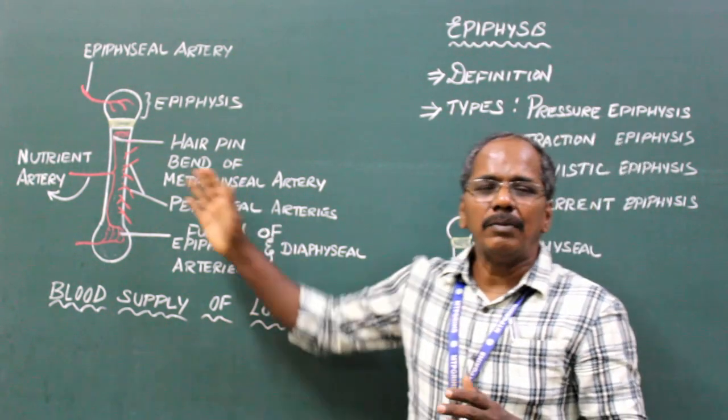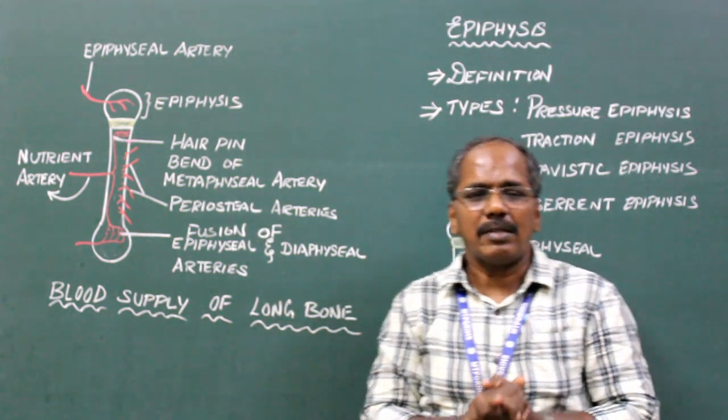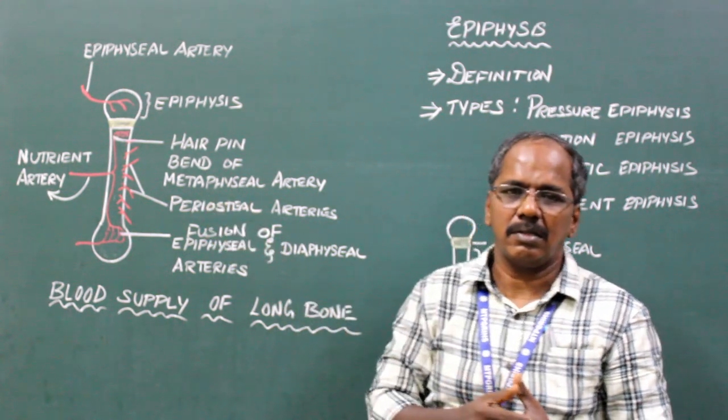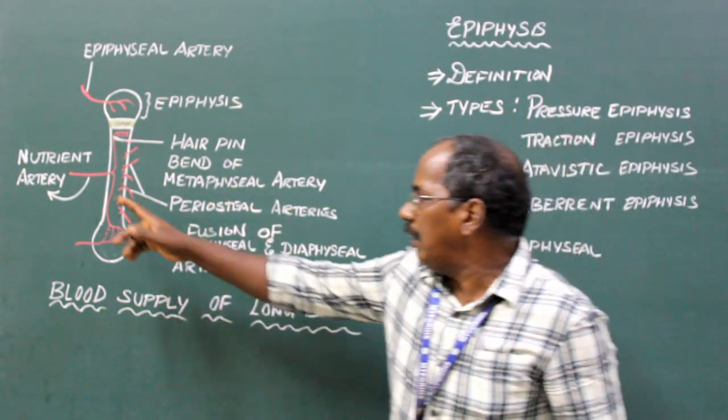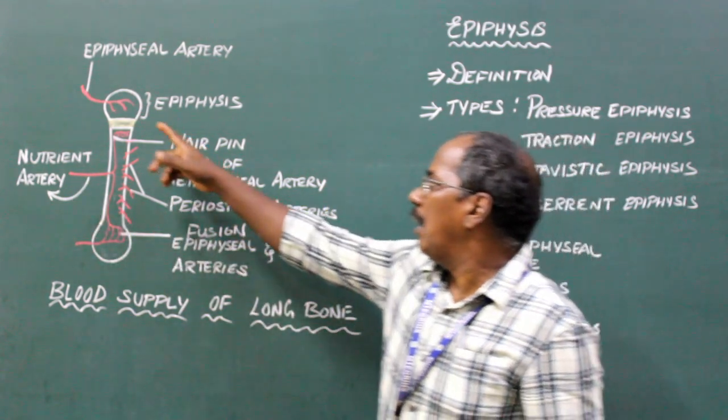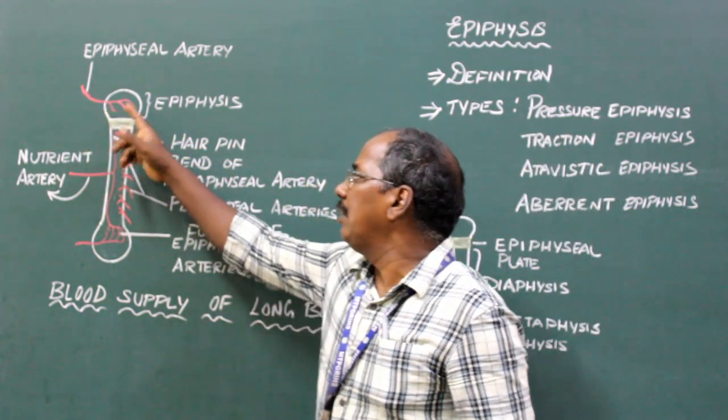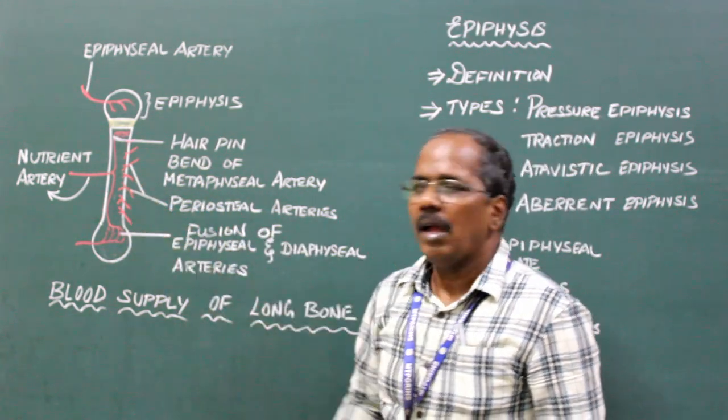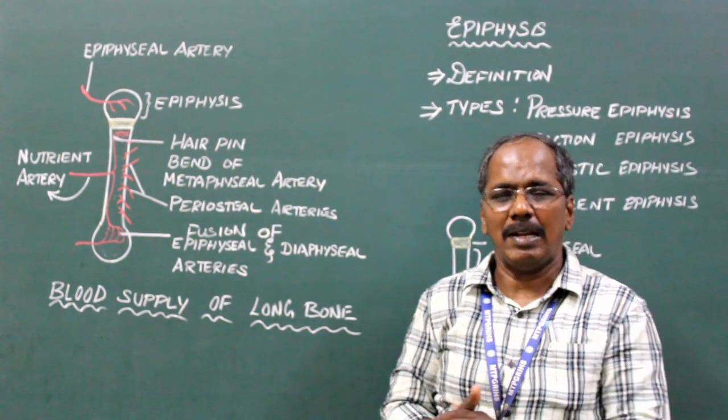A typical long bone has blood supply from the following sources: number one, nutrient artery; number two, epiphysial artery; number three, periosteal arteries; and number four, metaphysial artery.